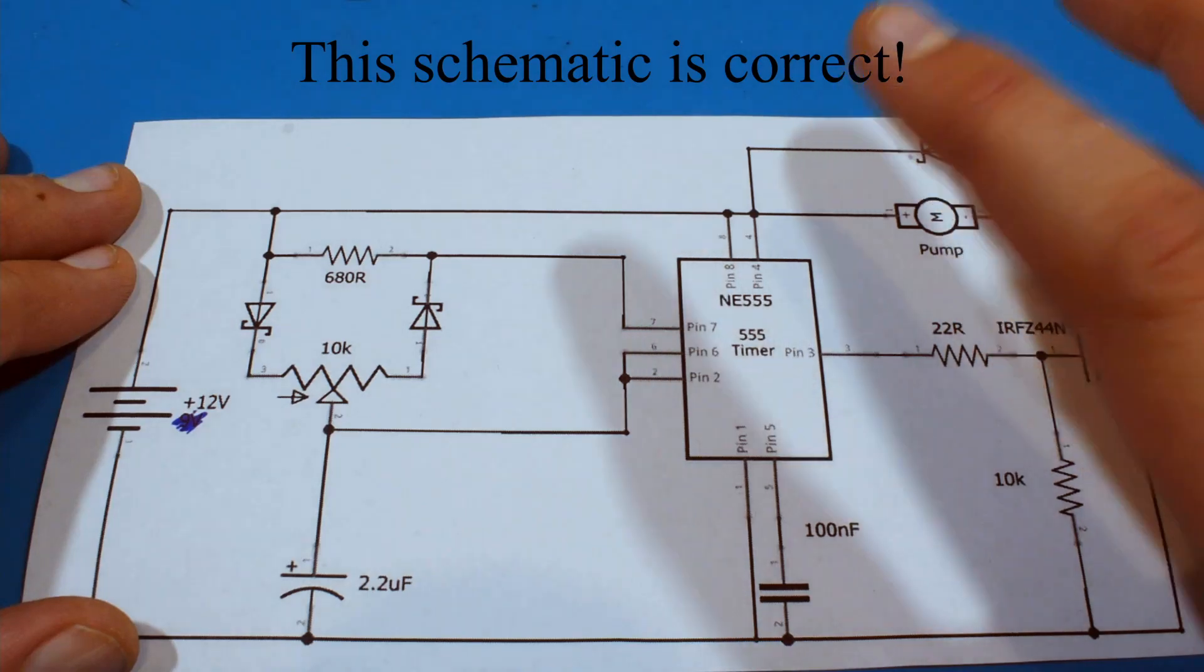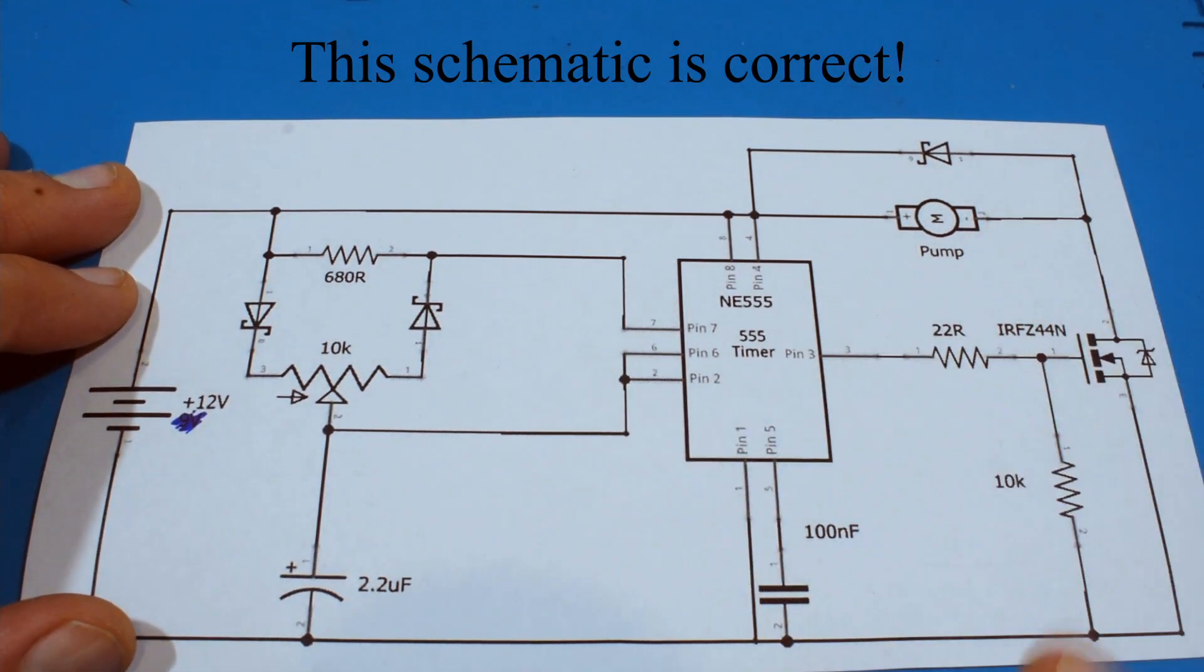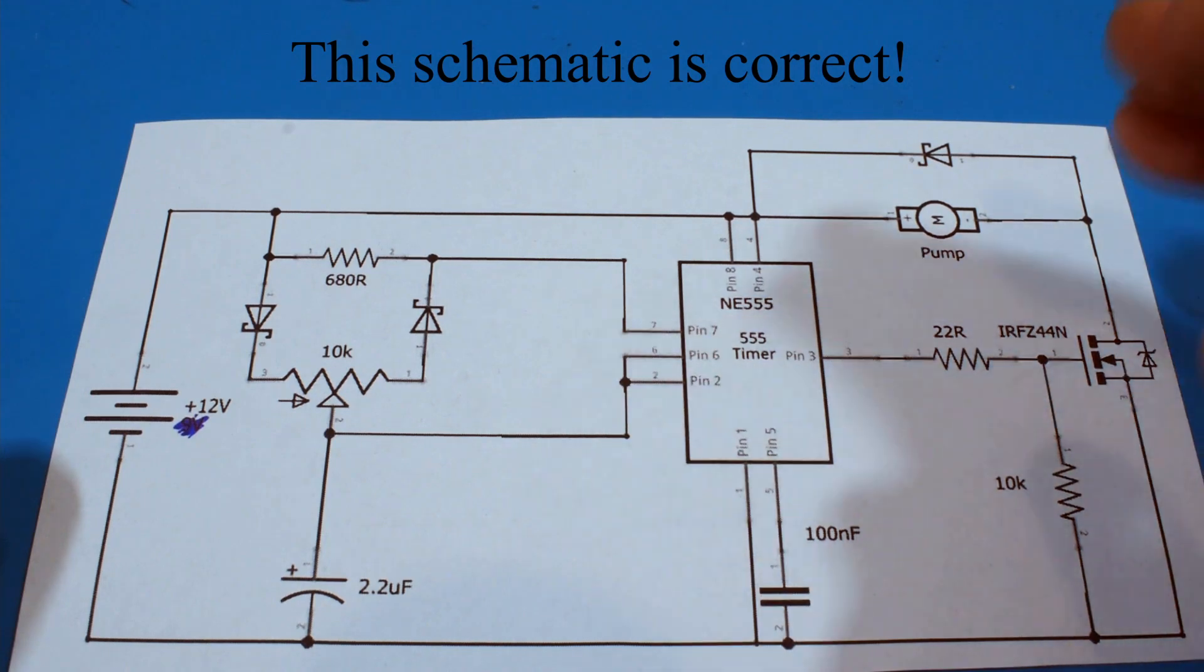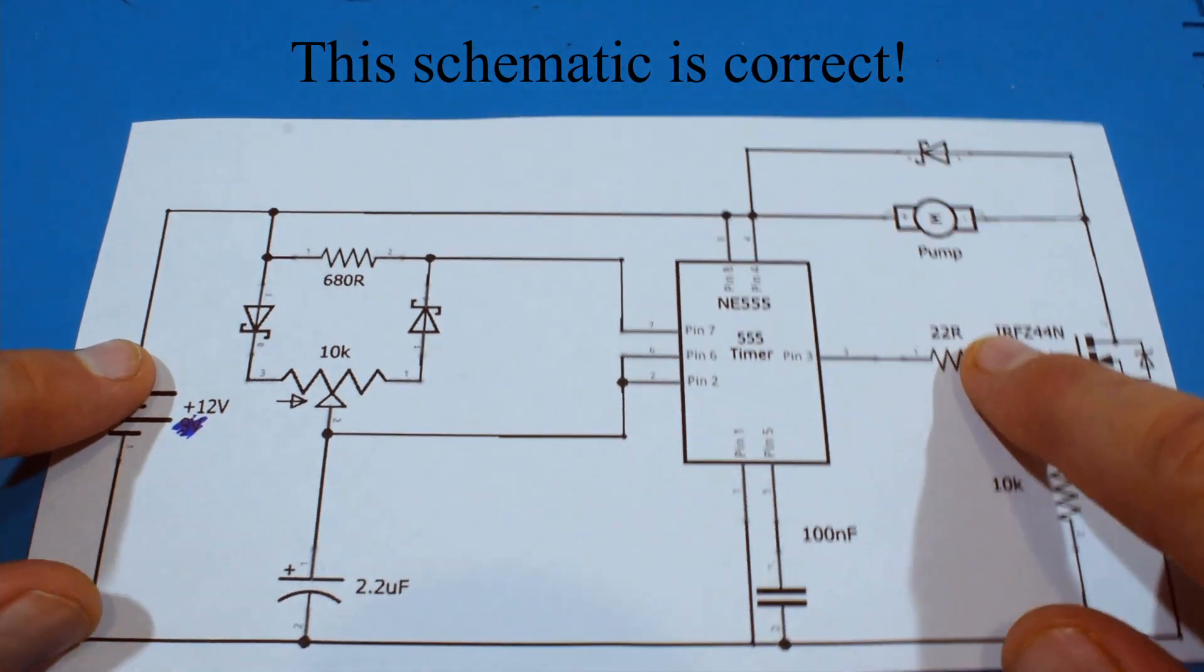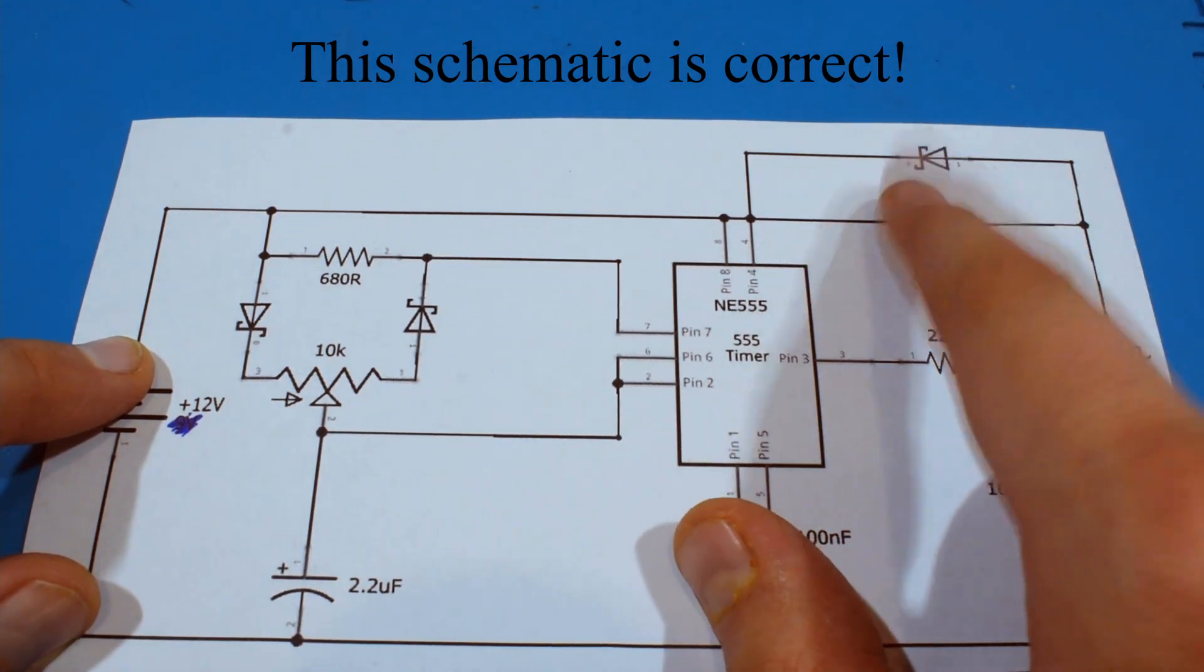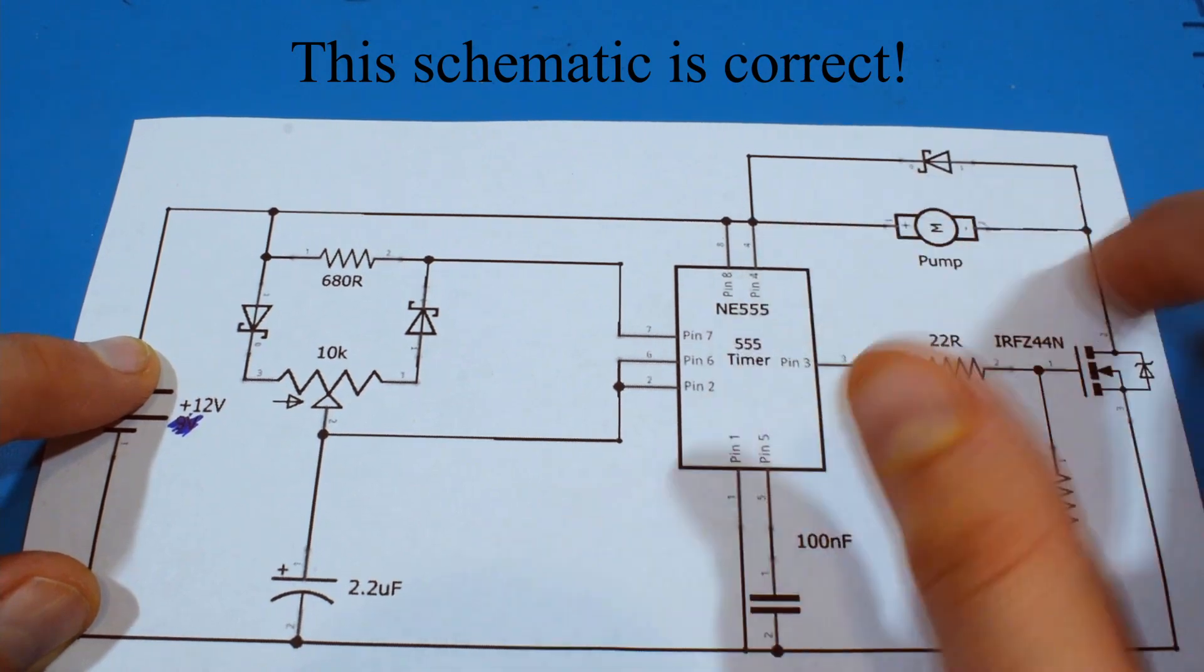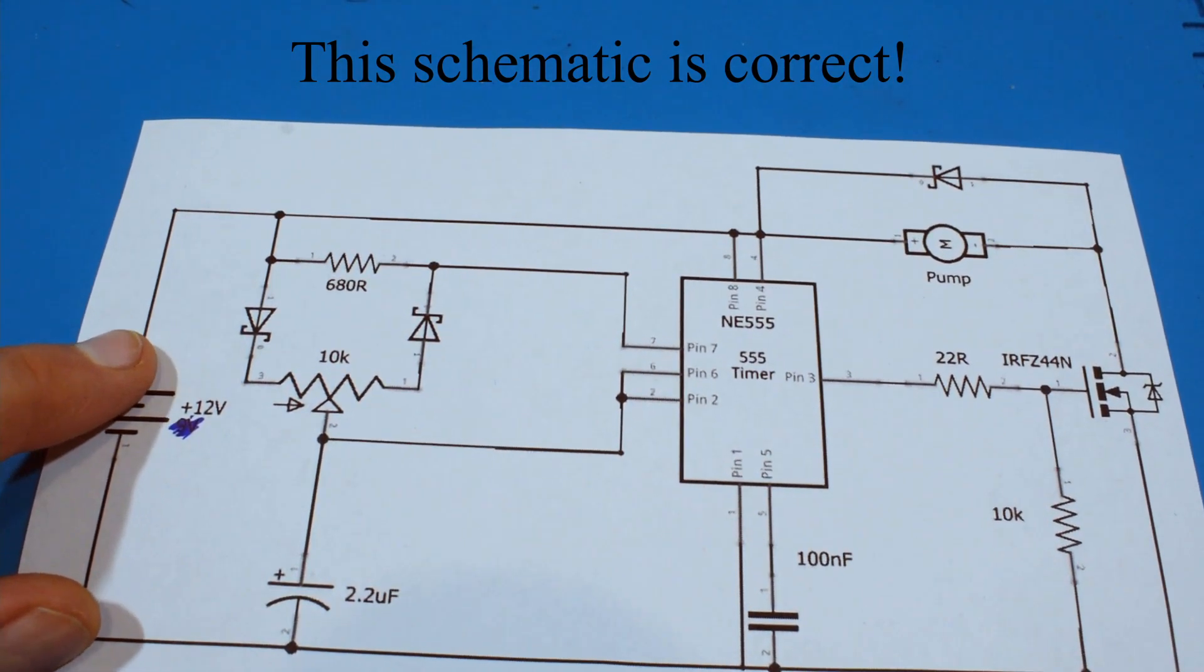The inductors don't like current changes. So when you disconnect the power, they have the ability to maintain the current by increasing the voltage immensely. And that at some point would probably fry this MOSFET. So when you put a flyback diode, the energy that was stuck in a magnetic field would just circle around here. It won't just rush through the MOSFET.